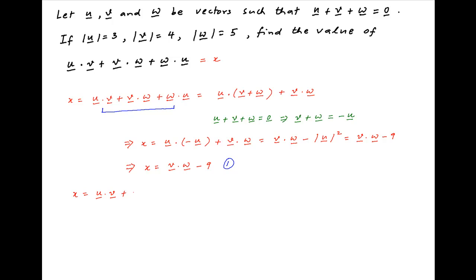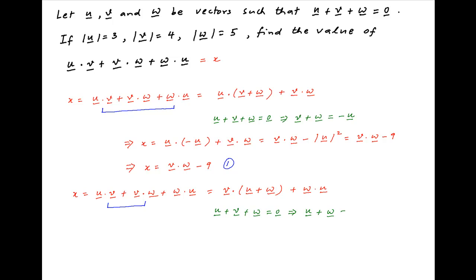Now, we again write x is equal to u dot v plus v dot w plus w dot u. And this time, combine the first two terms. Therefore, x can be written as v dot in brackets u plus w, plus w dot u. Again, using the given result u plus v plus w is equal to the null vector, we get u plus w is equal to minus v.